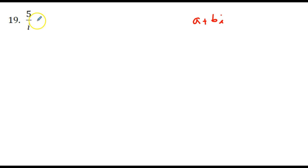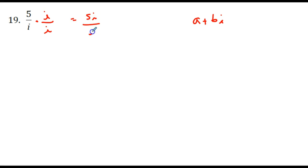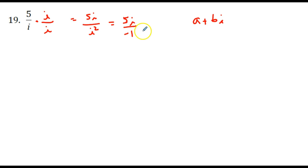What we're going to do is multiply by a form of 1. We're going to multiply by i over i, and that would give us 5i in the numerator and i squared in the denominator — i times i giving us i squared. And if you recall, i squared is the same as negative 1, so we have 5i divided by negative 1, which is the same as negative 5i.